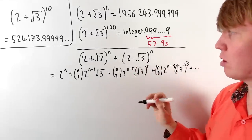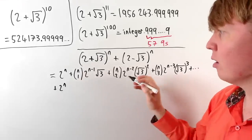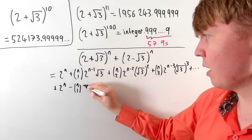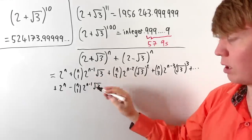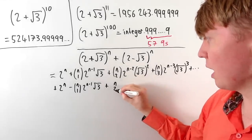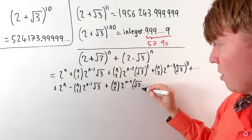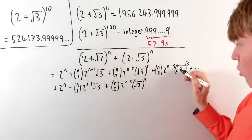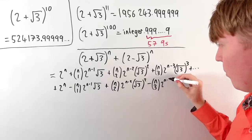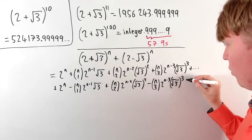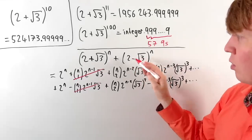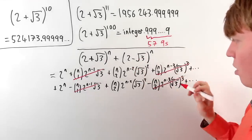When we expand (2 minus root 3) to the n, we get something very similar, but everywhere we have root 3 we replace it with negative root 3. So the term with root 3 to the first power becomes negative, and these two terms cancel when we add everything up. For root 3 squared, negative root 3 squared is still positive, so that term remains and is still an integer. For root 3 cubed, we get a negative term that again cancels with the corresponding term from the first expansion.